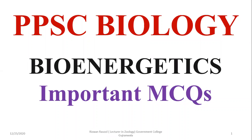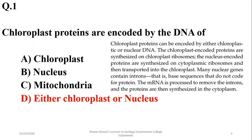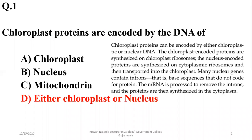In this portion we are going to discuss some important MCQs related to PPSC biology, bioenergetics portion. Question number 1: Chloroplast proteins are encoded by DNA. Usually chloroplast has its own DNA, but chloroplast proteins can also be encoded by nuclear DNA. So we go for the delta option — either chloroplast or nucleus — because chloroplast proteins can be encoded by either chloroplast or nuclear DNA.